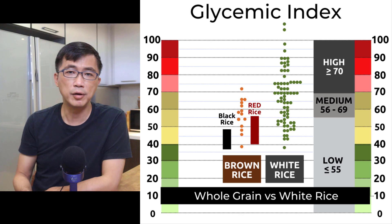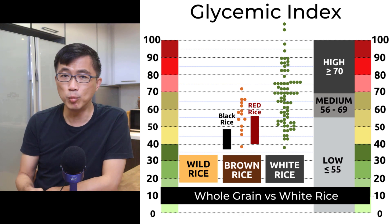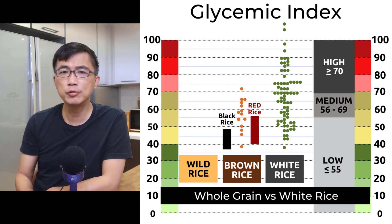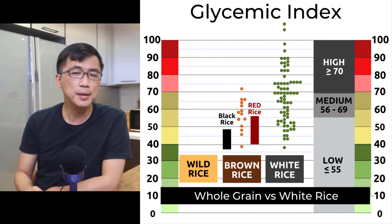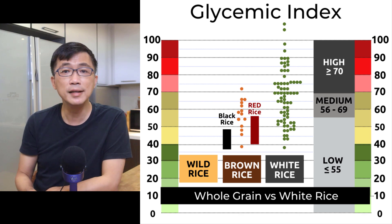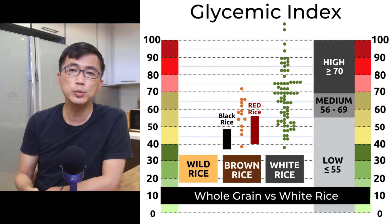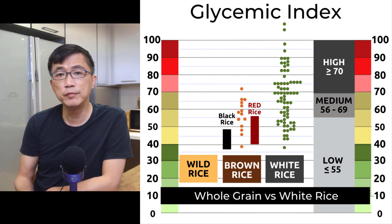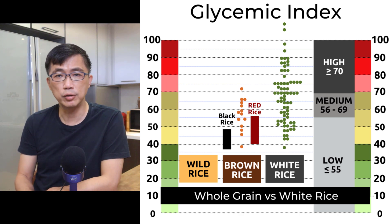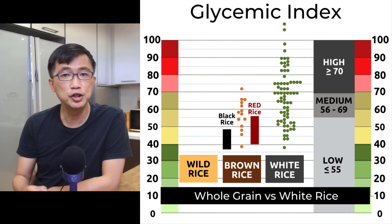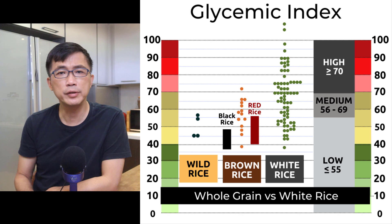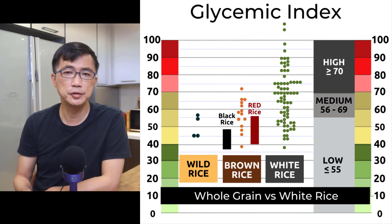Next, how about wild rice? Many people have asked me about wild rice and whether it is low GI. Technically, wild rice is actually not a rice — it belongs to a different family of plants different from rice. But it is generally used like rice and often compared with rice. There were 4 GI test records of wild rice in the GI database. The GI values of wild rice were in the mid-40s to mid-50s range.